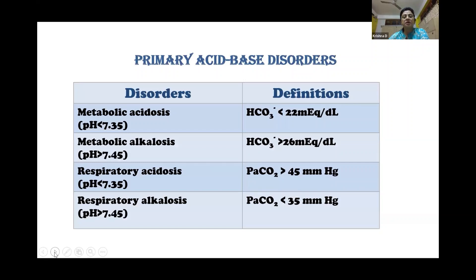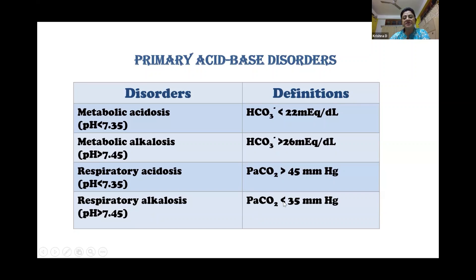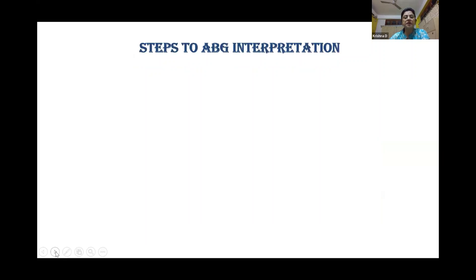What are the primary acid-base disorders? There are four primary acid-base disorders depending on the values of pH, bicarbonate, and carbon dioxide. Metabolic acidosis is present when pH is less than 7.35 and bicarbonate is less than 22 mEq/dL. Respiratory acidosis: pH less than 7.35 and CO2 more than 45 mmHg. And in respiratory alkalosis, pH is more than 7.45 and CO2 is less than 35 mmHg.